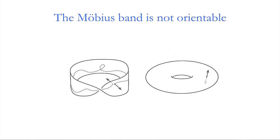On the left I'm at a point on the Möbius band and I have two normal vectors — two directions at right angles to the surface. On the right I'm at a point on the torus or doughnut, and similarly I have two normal directions. The torus is often said to be two-sided; the Möbius band is often said to be one-sided. What is the difference?